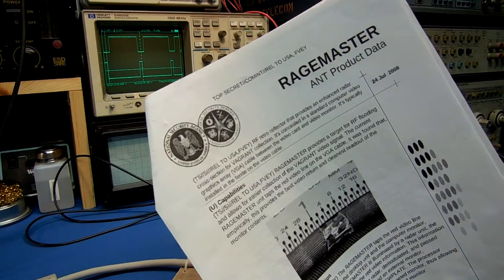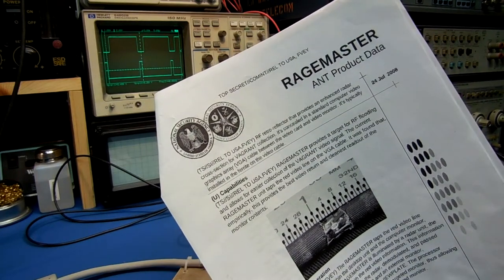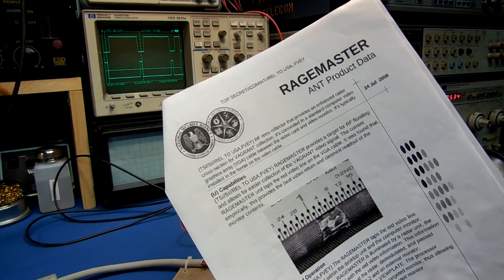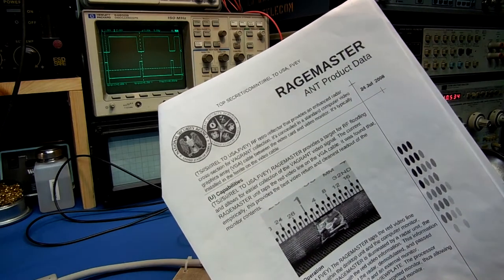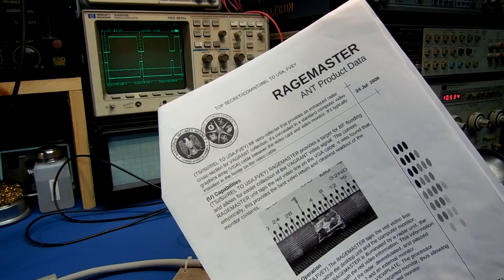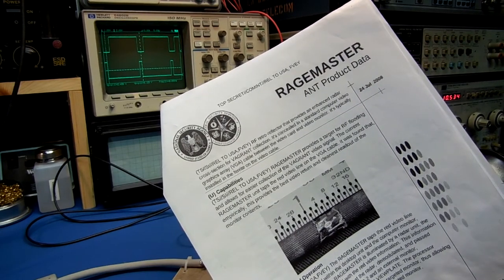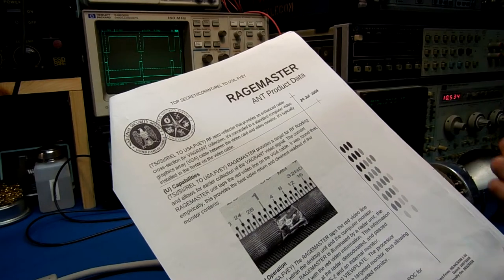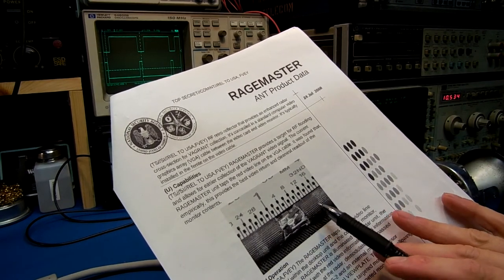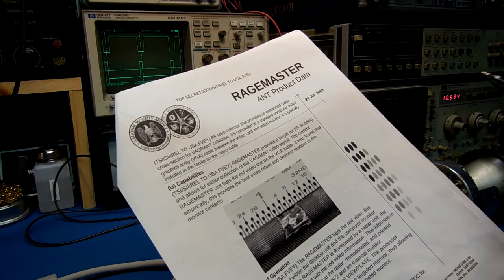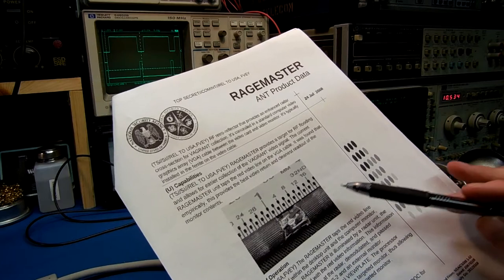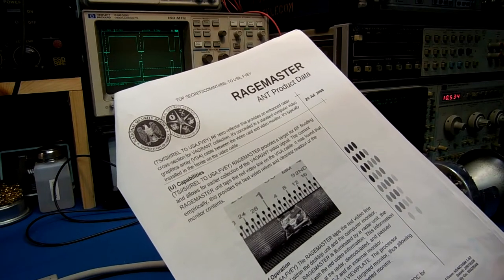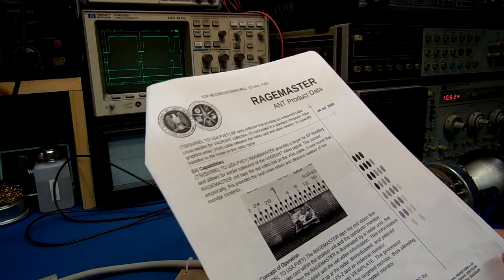This is going to be an overview of the RageMaster RF retroreflector used by the NSA. This is used for what they refer to as vagrant collection, which is the interception of remote computer monitors by installing a little hardware retroreflector into the actual targeted VGA monitor's video cable itself. This device taps the red video line within the cable bundle, and then when illuminated by a remote radar unit like the CTX-4000 or the photo angle, the red video signal becomes modulated within the backscattered signal and that can then be processed and displayed on an external monitor so you can essentially see what is on your targeted monitor.